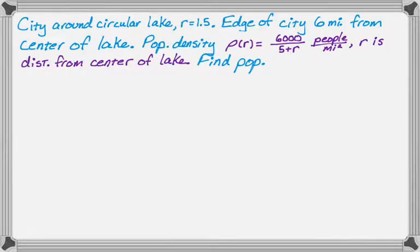We have a city around a circular lake that has a radius of 1.5 miles, which is an enormous lake. The outer edge of the city is 6 miles from the center of the lake.